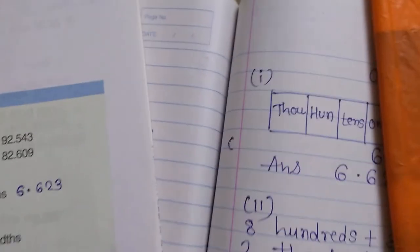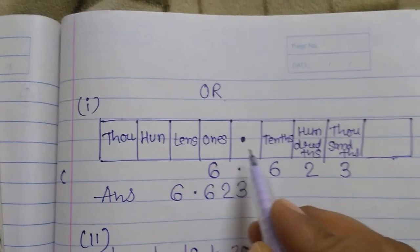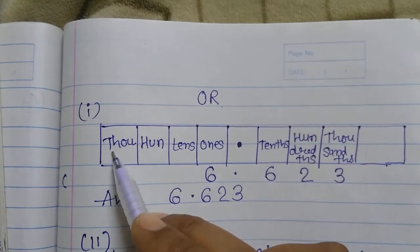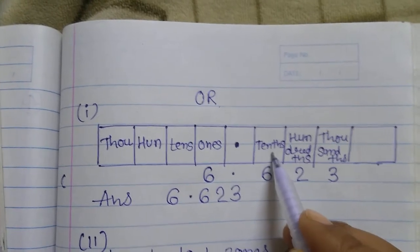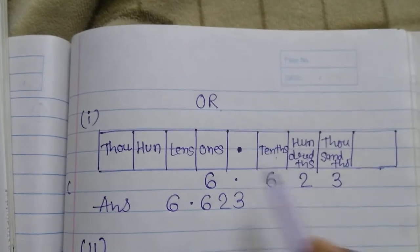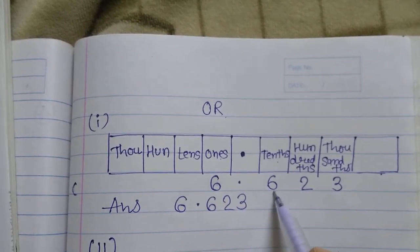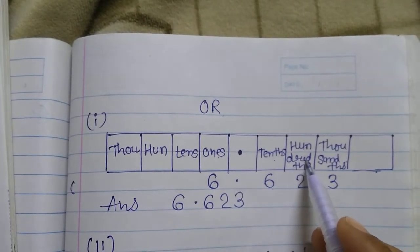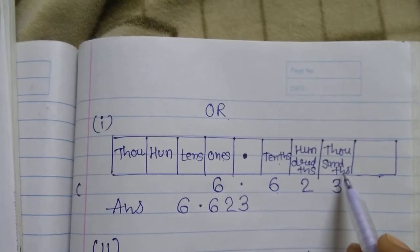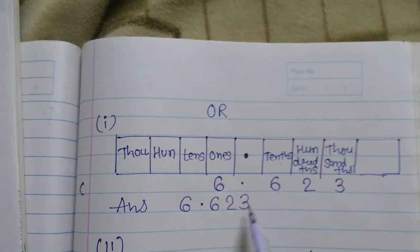I am also explaining this through a chart. You can use the chart if the direct method is not clear. In the chart, the decimal is in the middle; on the left-hand side we have ones, tens, hundreds, thousands; and on the right-hand side of the decimal we have tenths, hundredths, thousandths. From the question: six ones → write 6 in the ones box; six tenths → write 6 in the tenths box; two hundredths → write 2 in the hundredths box; three thousandths → write 3 in the thousandths box. So the answer is 6.623.